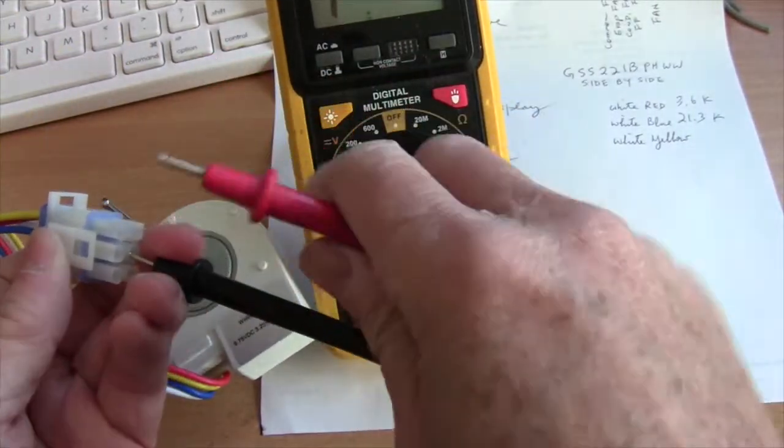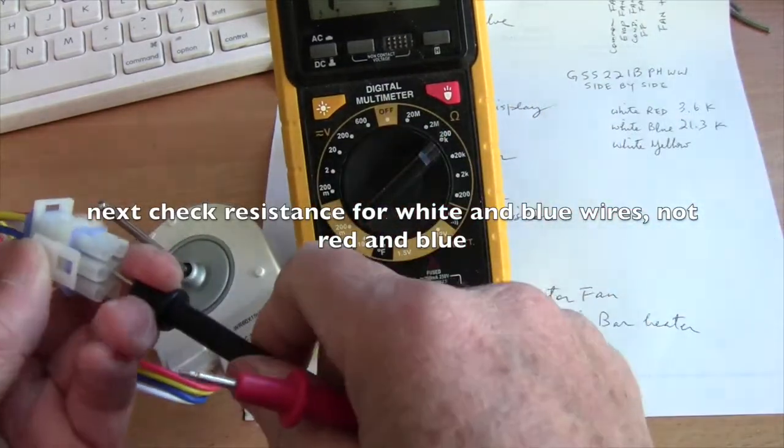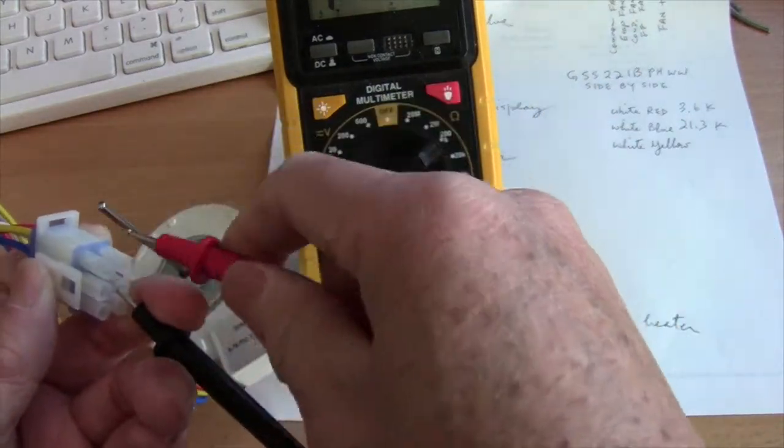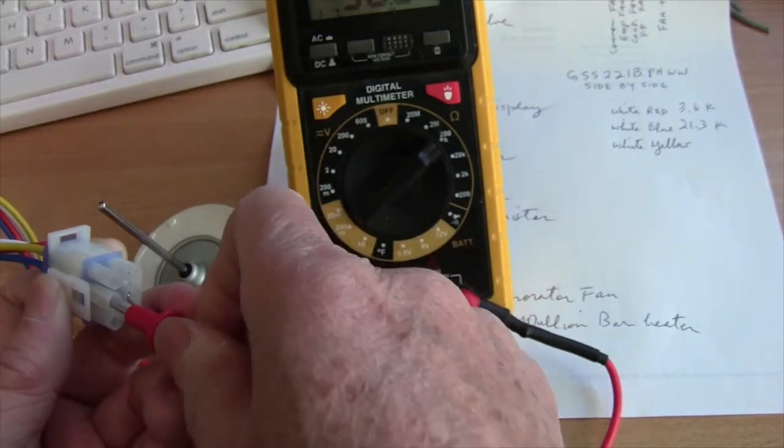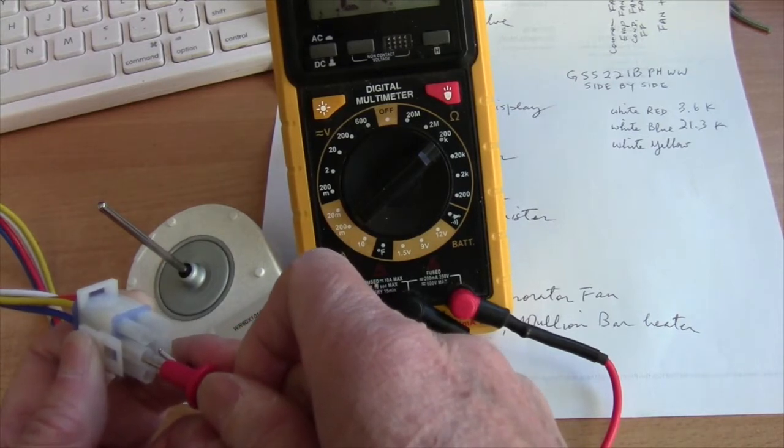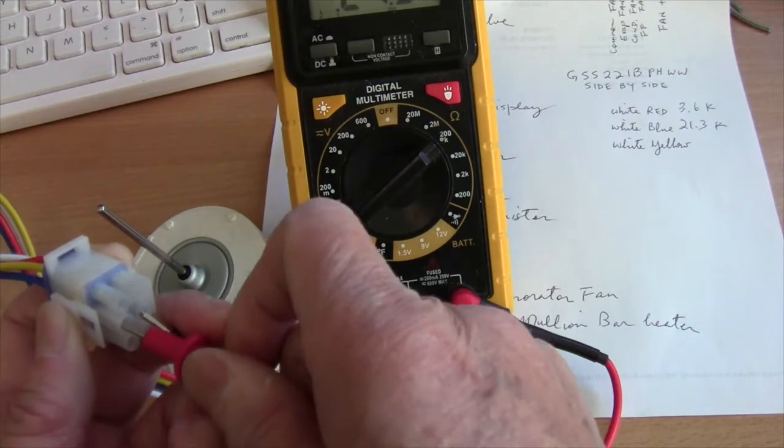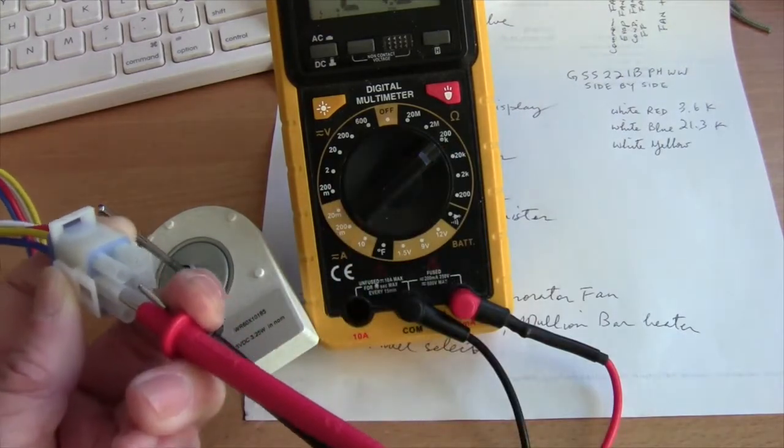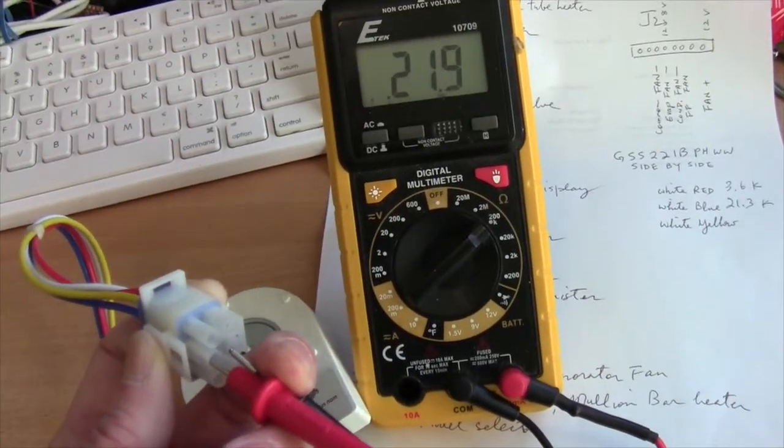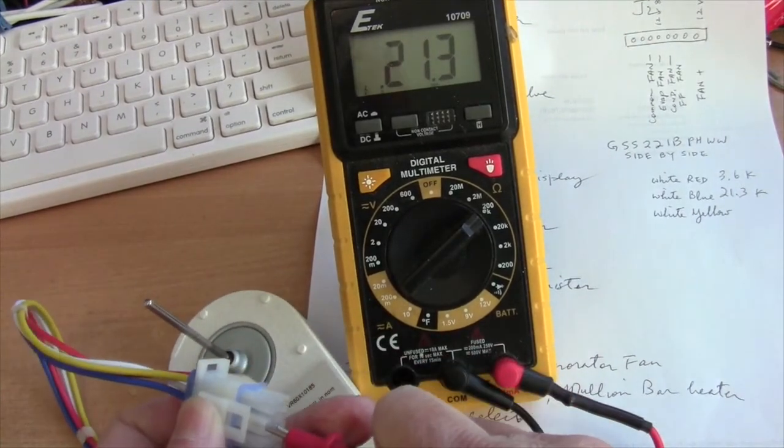And then you have the red and the blue. The blue is 21K or so. So I set it to 200K setting on the meter. So it reads 21.3. Now you see 21.3.